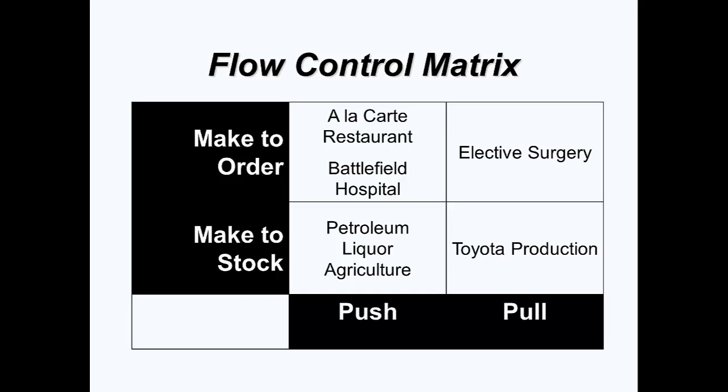Workflow control and customer fulfillment policies are independent decisions. This matrix offers examples of each possible combination. Starting at the upper left, a restaurant and a battlefield or emergency hospital are both examples of make-to-order. On the other hand, an elective surgery center is a pull system because there is, in fact, a hard limit on work in progress enforced by the number of beds available in the hospital.